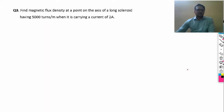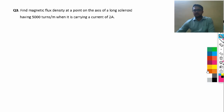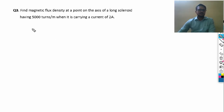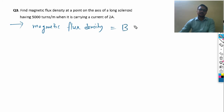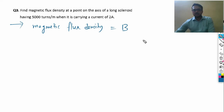The third question is a numerical. Find the magnetic flux density — keep in mind magnetic flux density means you have to find B. Magnetic flux density is also known as the magnetic field B.